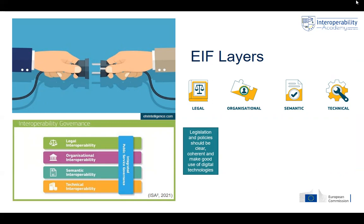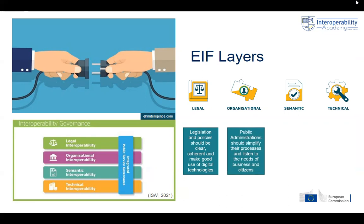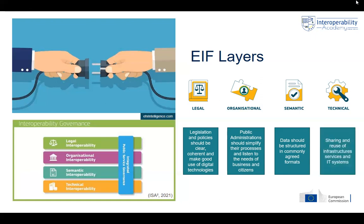The legal layer looks into alignment of legislation and policies. Legislation and policies should be clear, coherent, and embed how digital technologies can be used. The organizational interoperability layer looks into simplification of processes by public administrations and the integration of needs from businesses and citizens. Semantic interoperability focuses on ensuring data is structured and documented with common agreed formats so data are exchangeable. Technical interoperability is about sharing the use of infrastructures, services, and IT systems so that machines can communicate with each other.